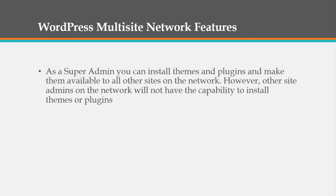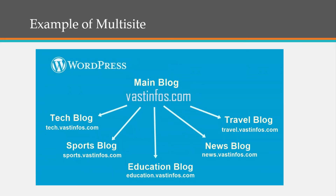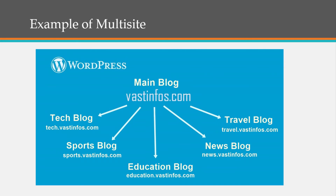Here is an example of WordPress multi-site. The main blog is vastinforce.com. Under the vastinforce.com WordPress installation, I can create many sub-blogs — for example, for technology I can create tech.vastinforce.com, which is a separate blog but comes under the same installation using WordPress multi-site. Similarly, I can create a sports blog, education blog, news blog, travel blog, etc. The main advantage is no need for separate installations, and you can share all plugins and themes among these blogs.